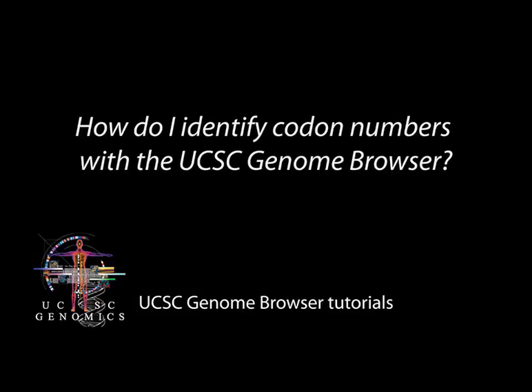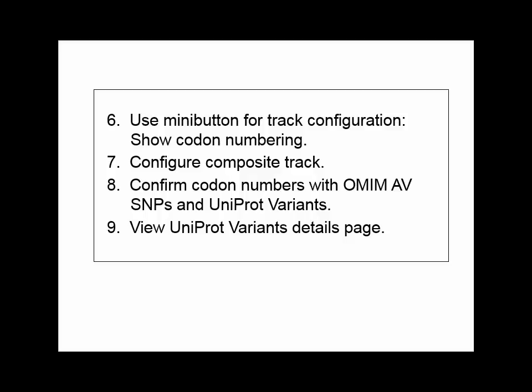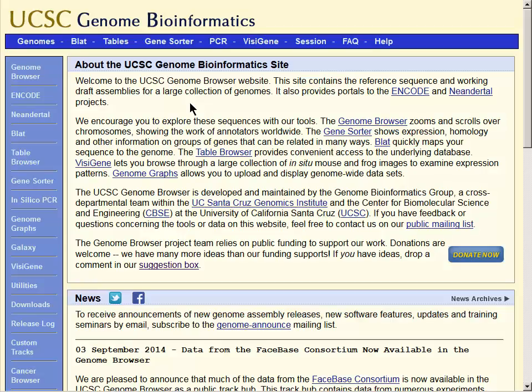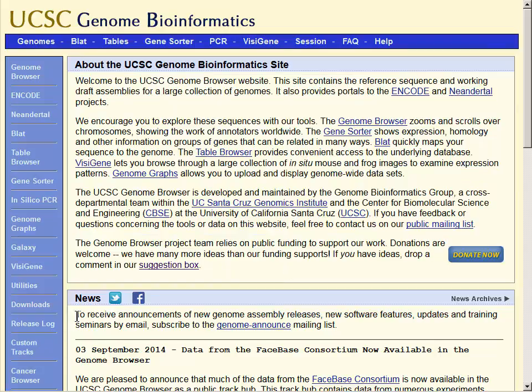This tutorial will demonstrate how to locate amino acid numbers for coding genes using the UCSC Genome Browser. First we will navigate to genome.ucsc.edu and arrive on the main page, where we can read information about the browser and recent news.